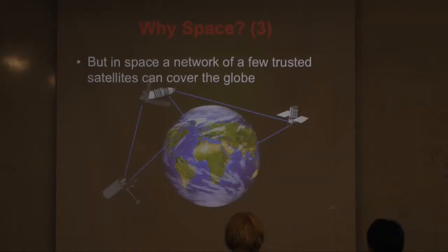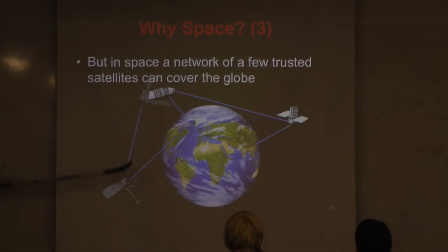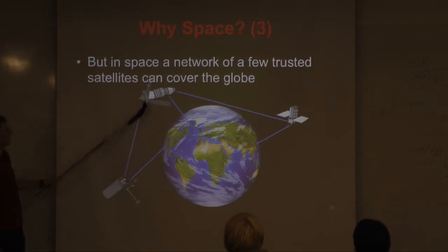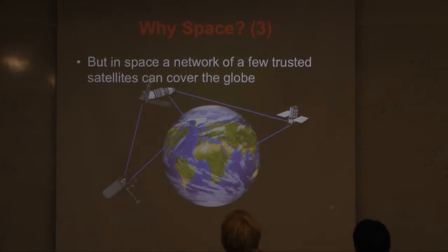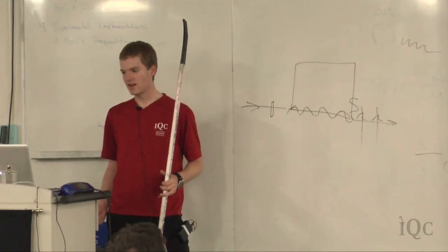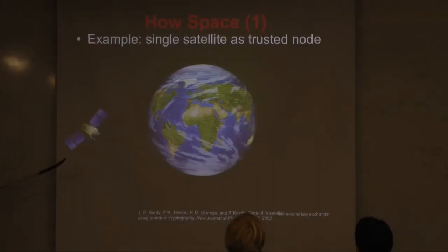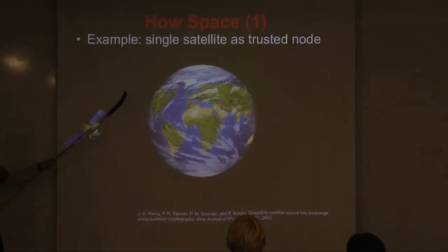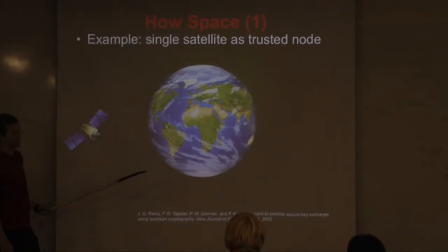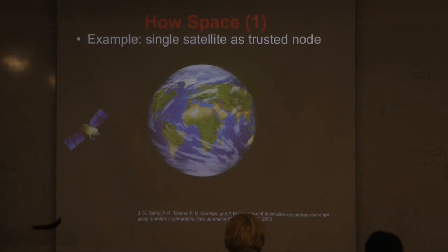It looks like we can do space now. A few satellites orbiting somewhere around the world could probably cover the Earth. The simplest example is one satellite orbiting the Earth that we trust and use as a trusted node.